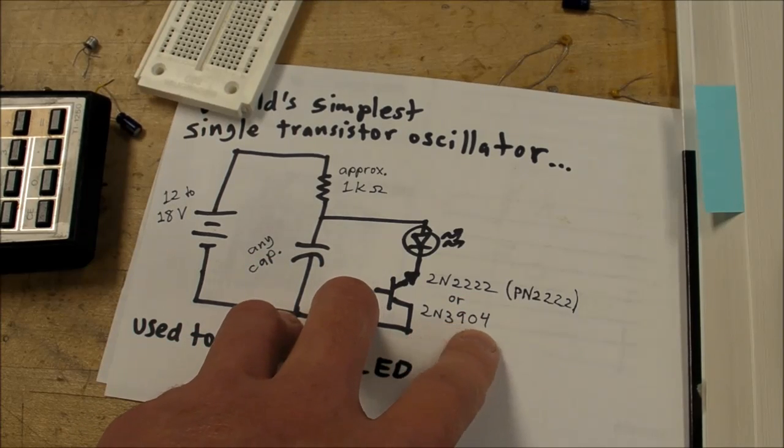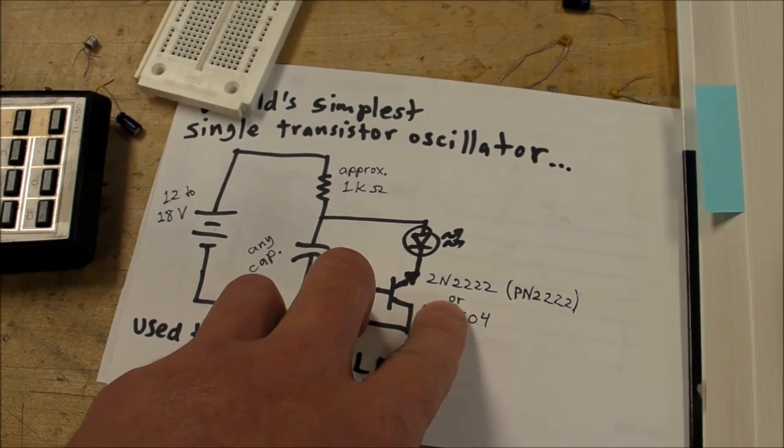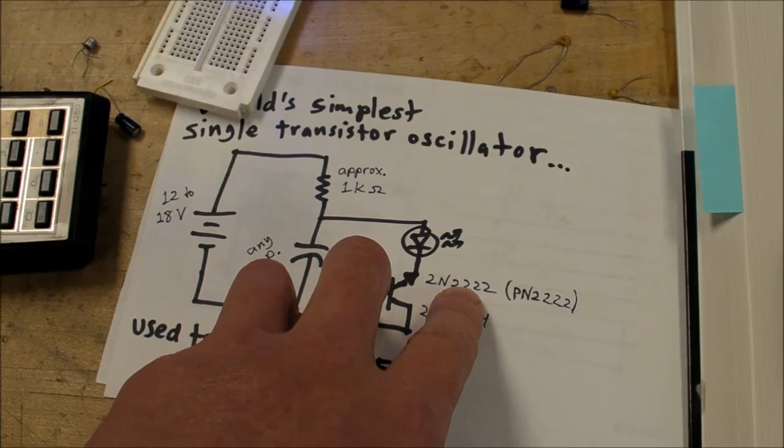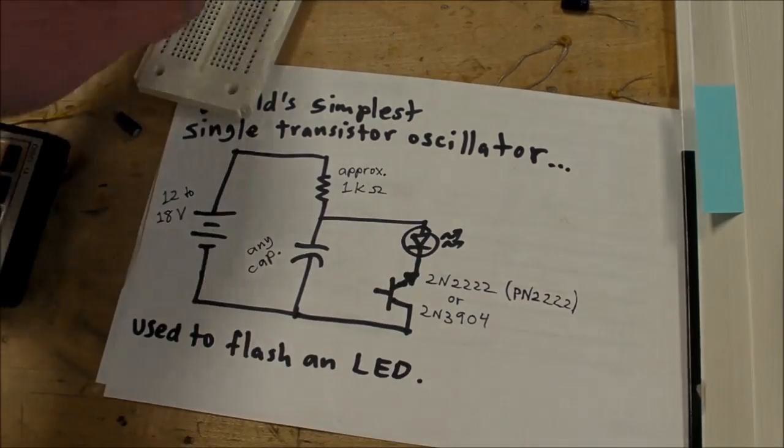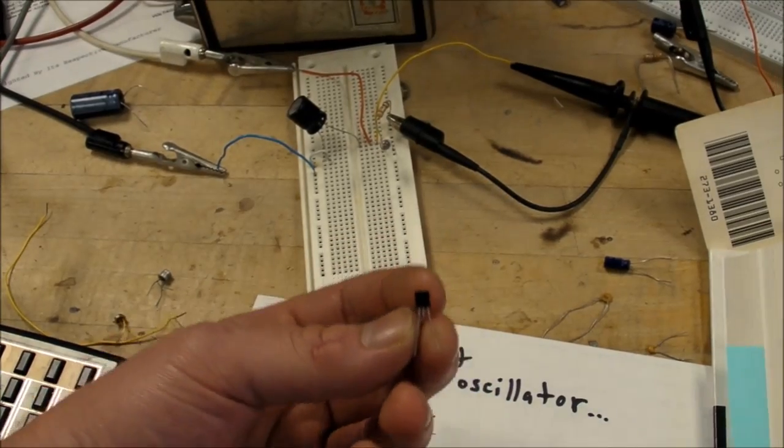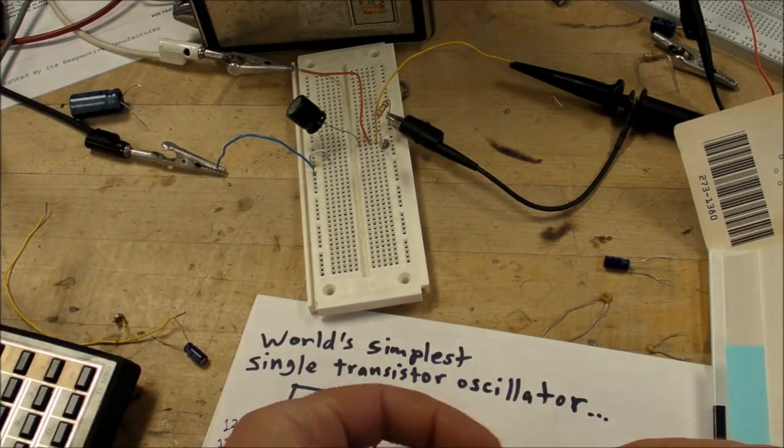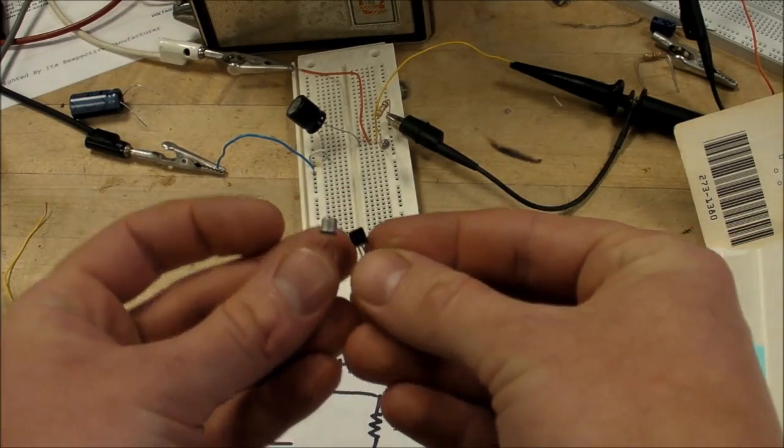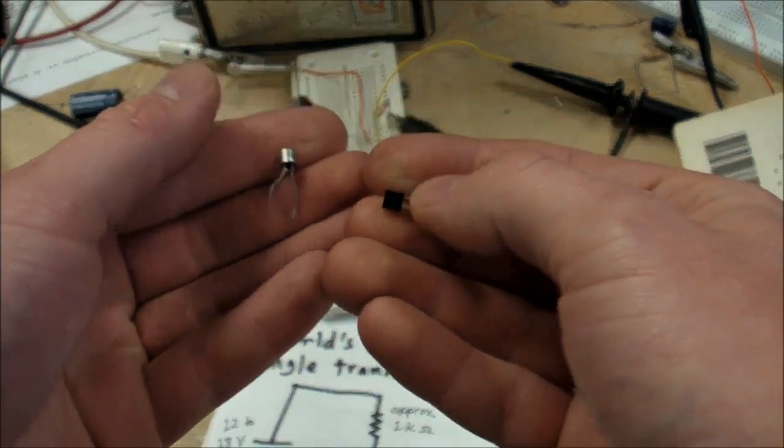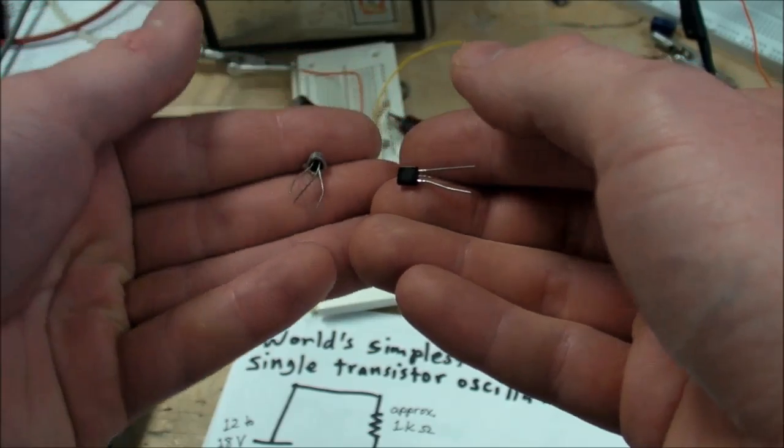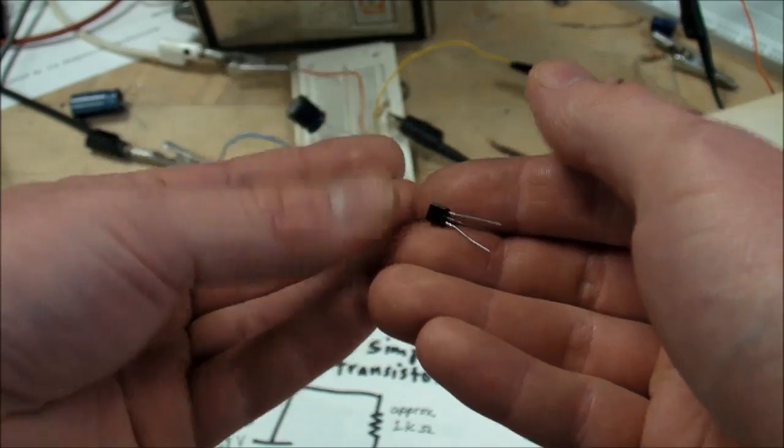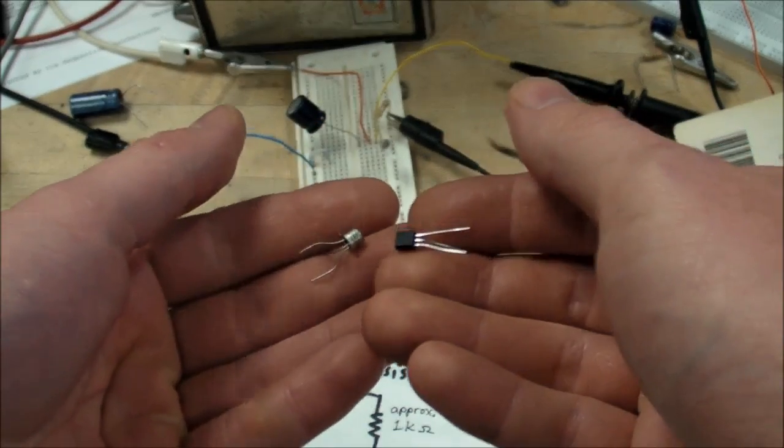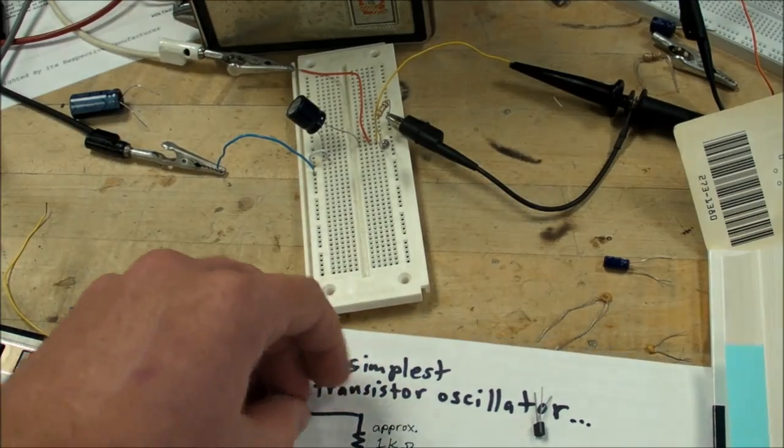I found the 2N2222 and the 2N3904 both work. Others may work, others will not work - I'm not sure. Also the PN2222, which is the one in the plastic case like this one here - that's the PN - and the 2N that's in the metal case, rated for slightly higher power. That's another something I never learned until just a couple years ago. I always thought they were both exactly the same, just different packages, but they do have slightly different characteristics.